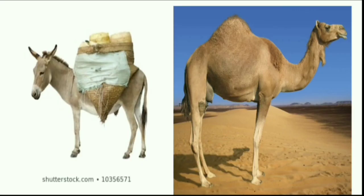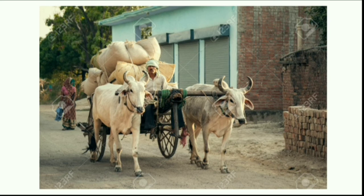Now, see this. In this picture, there is a donkey, which helps us to carry loads. A camel, which is very useful in desert areas — it is used to travel to many places, carries people on its back, and walks through the desert, also carrying loads. We also have the bullock cart; the bulls pull the bullock cart, and the farmers use them for ploughing the field and to carry loads to different places like markets and other cities.